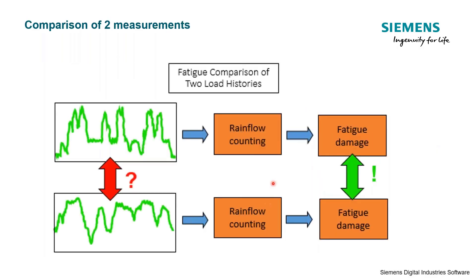One big benefit of rainflow counting is we can do comparisons of two measurements to determine which one would be more damaging. If you look at the time history from track A and the time history from track B, you might wonder which one is more damaging — it's difficult to tell by just looking at the time domain history. If you send both through rainflow counting and do a fatigue damage calculation, it would be much simpler. We need tools like rainflow counting to make complicated time histories simple to understand.